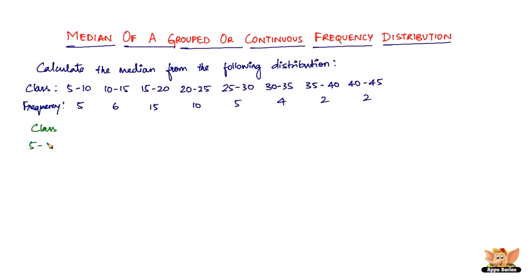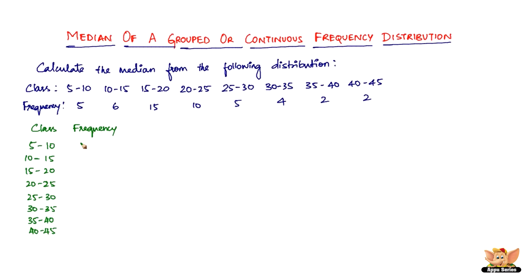The classes are: 5 to 10, 10 to 15, 15 to 20, 20 to 25, 25 to 30, 30 to 35, 35 to 40, and 40 to 45. The corresponding frequencies are: 5, 6, 15, 10, 5, 4, 2, and 2.